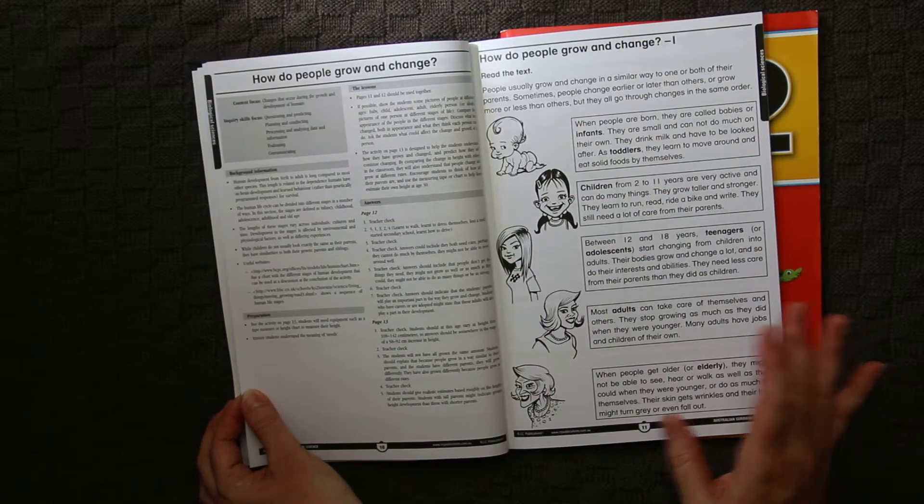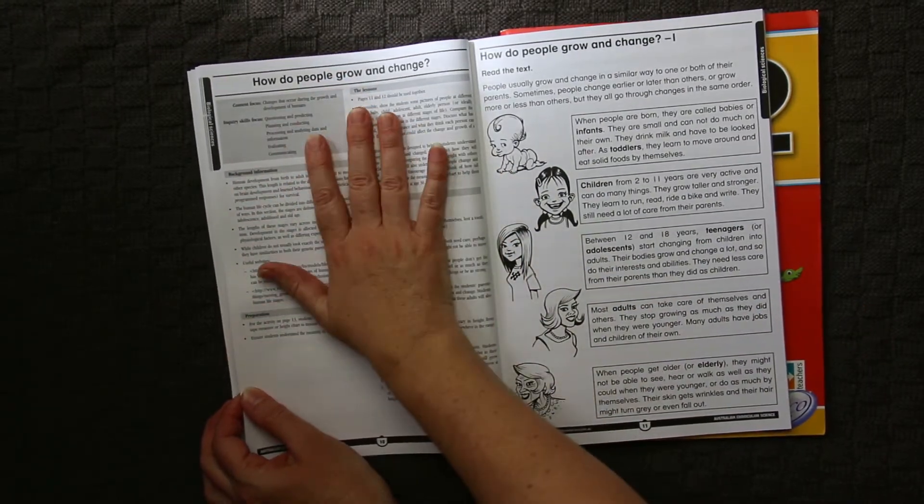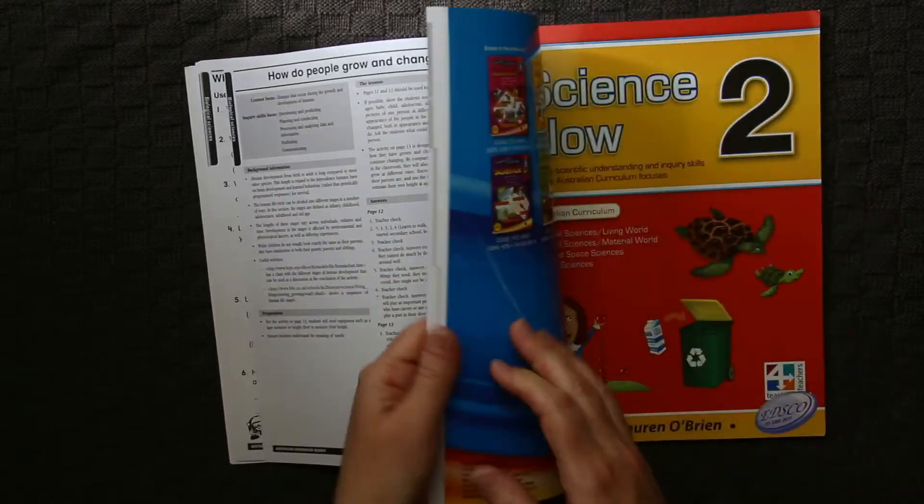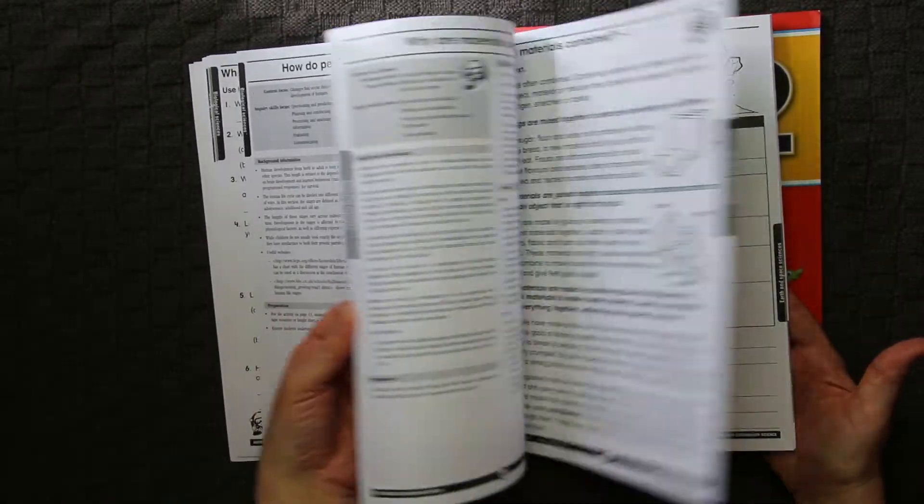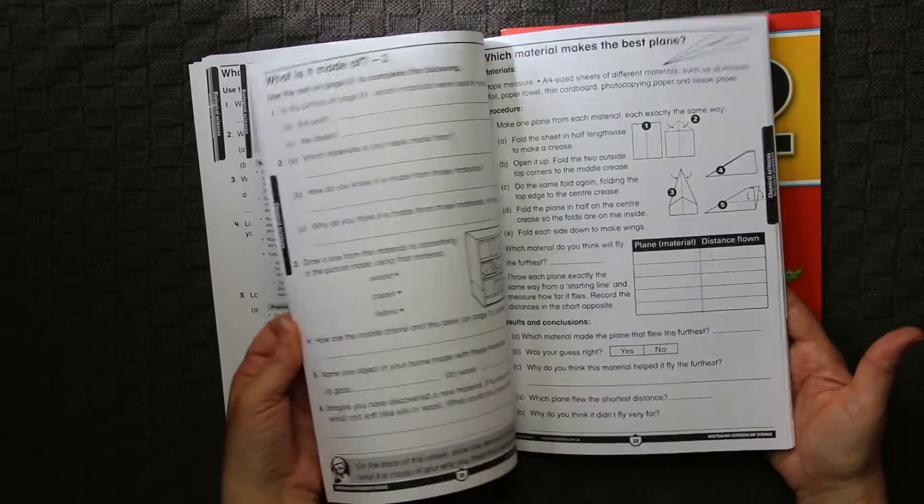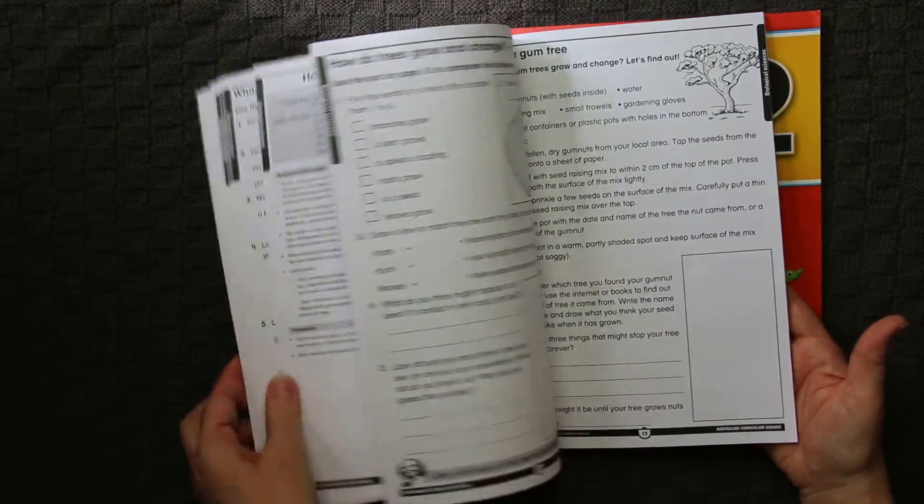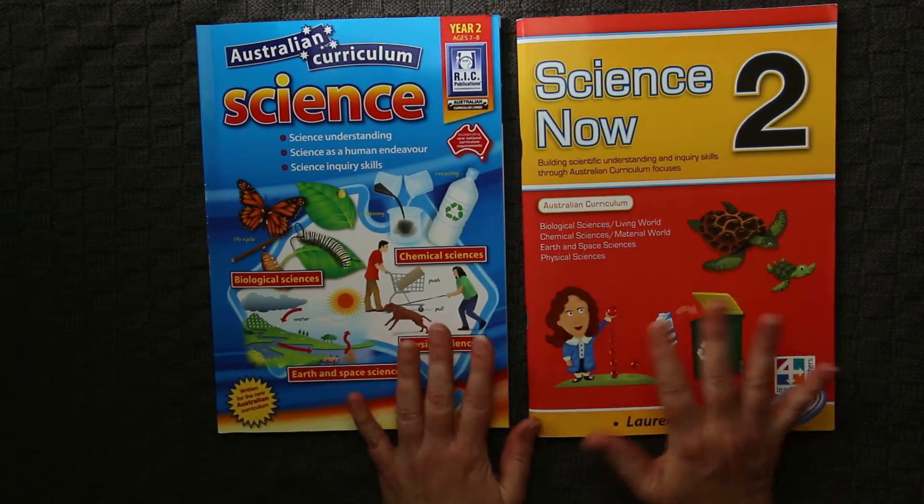Whereas I'm not able to find that information in this book. It is all curriculum aligned, and it does give a brief account up here in the top left-hand corner of the teacher's page. But it doesn't actually give us the Australian Curriculum Codes that each lesson is relating to. So whether that's important to you, only you can answer that question.